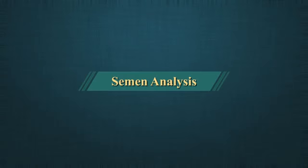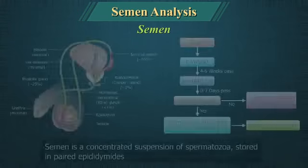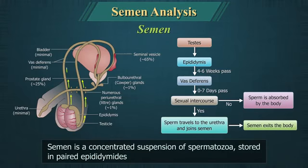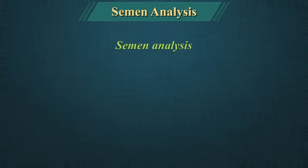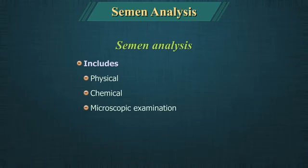Semen Analysis. Semen is a concentrated suspension of spermatozoa produced in the testes, stored in the paired epididymis, mixed with secretions from the accessory sex organs, mainly prostate and seminal vesicles, with minor contribution from the bulbo-urethral glands. Semen analysis is the physical, chemical and microscopic examination of semen.